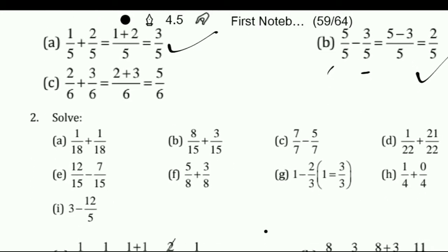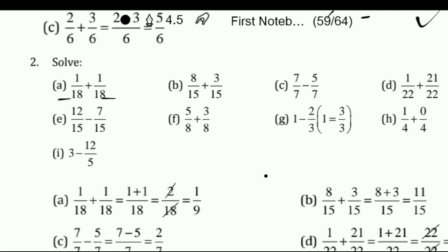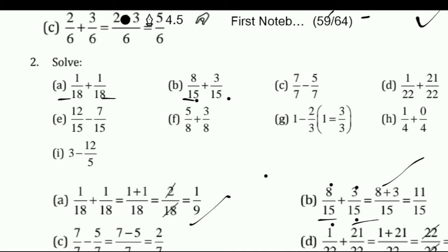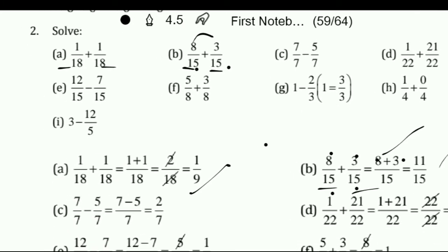Next, solve 1 upon 18 plus 1 upon 18. We have the same denominator, so we add the numerators: 1 plus 1 is 2 upon 18, which simplifies to 1 upon 9. Next, 8 upon 15 plus 3 upon 15. Again same denominator, so we add the numerators: 8 plus 3 is 11 upon 15. The next questions are similar.